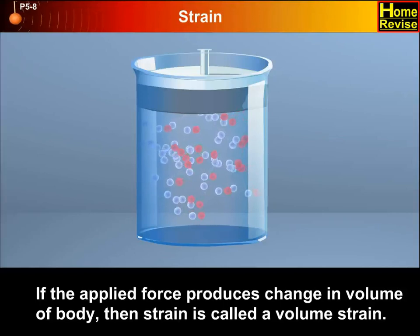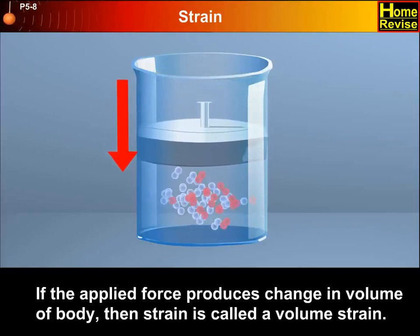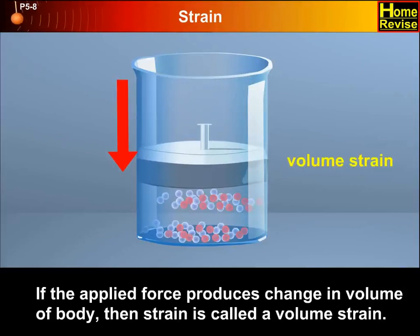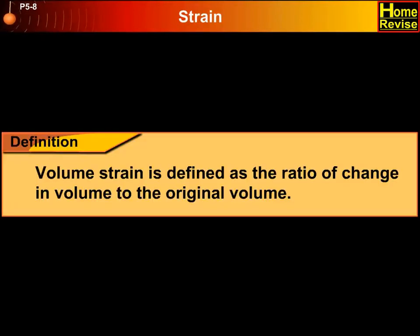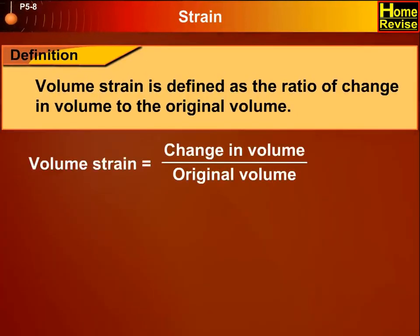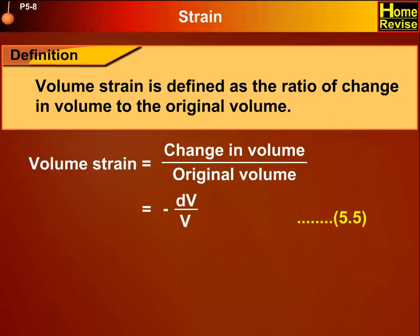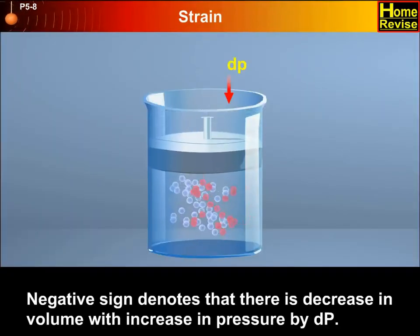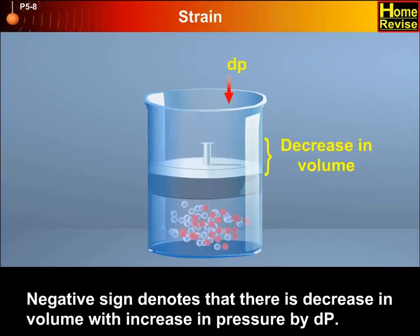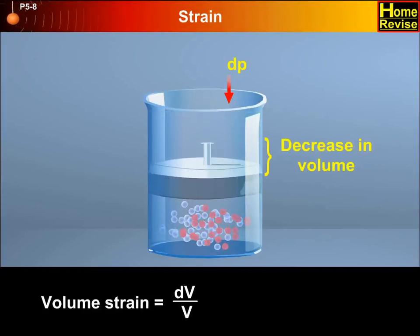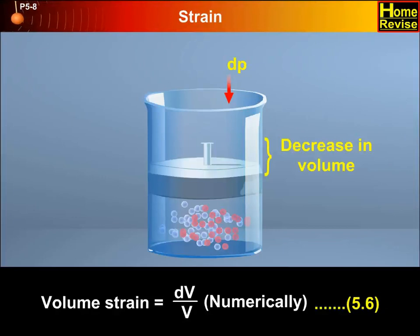If the applied force produces change in volume of a body, then the strain is called volume strain. Volume strain is defined as the ratio of change in volume to the original volume. So volume strain is equal to change in volume upon original volume, that equals minus dV upon V. The negative sign denotes a decrease in volume with increase in pressure by dP. Numerically, volume strain equals dV upon V. This is equation 5.6.